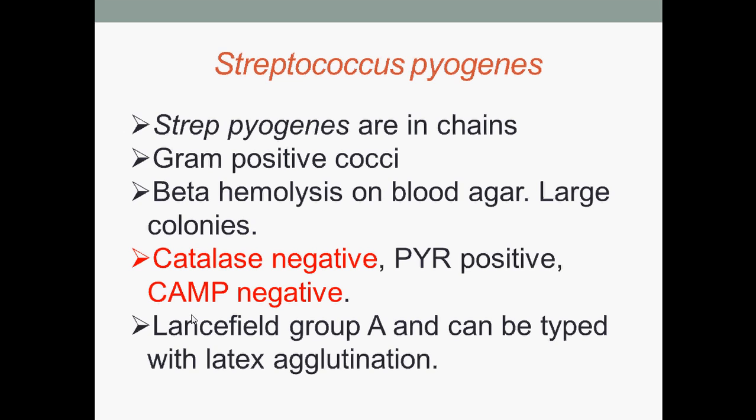The CAMP test is used to identify group B beta-streptococci based on the formation of a substance called the CAMP factor that enlarges the area of hemolysis. Their Lancefield group is A, which can be typed with latex agglutination. The Lancefield test is a serological classification of beta-hemolytic streptococcal bacteria developed by Rebecca Lancefield, based on the carbohydrate composition of bacterial antigens found on their cell walls.